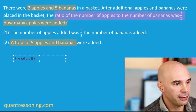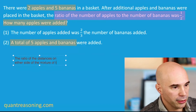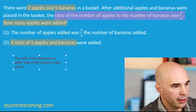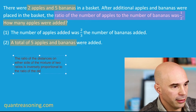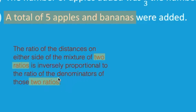The ratio of the distances on either side of the mixture of two ratios — this is a bit of a mouthful — is inversely proportional to the ratio of the denominators of those two ratios. When we talk about these two ratios, that's the same two ratios. That's the concept — that's the rule — that we used in order to determine that statement one has to be sufficient on its own.